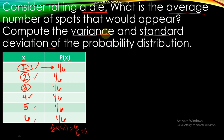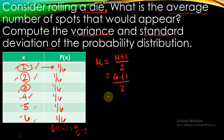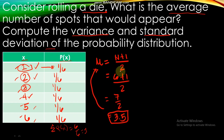Since this is a discrete uniform distribution, we use the formula for finding the mean: mu equals (n + 1) / 2. Here, n is the total number of outcomes. There are 6 possible outcomes, so we compute: (6 + 1) / 2 = 7 / 2 = 3.5. So the mean is 3.5.